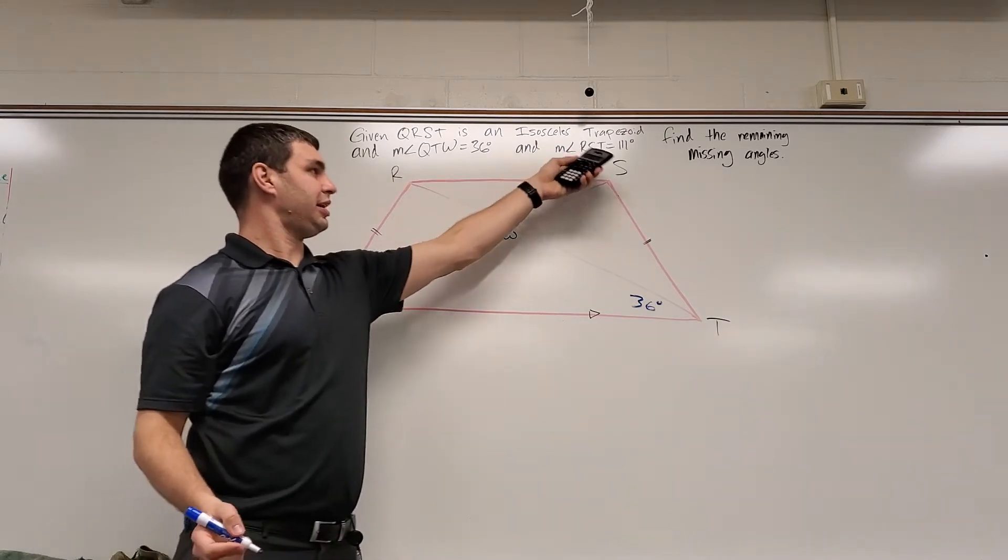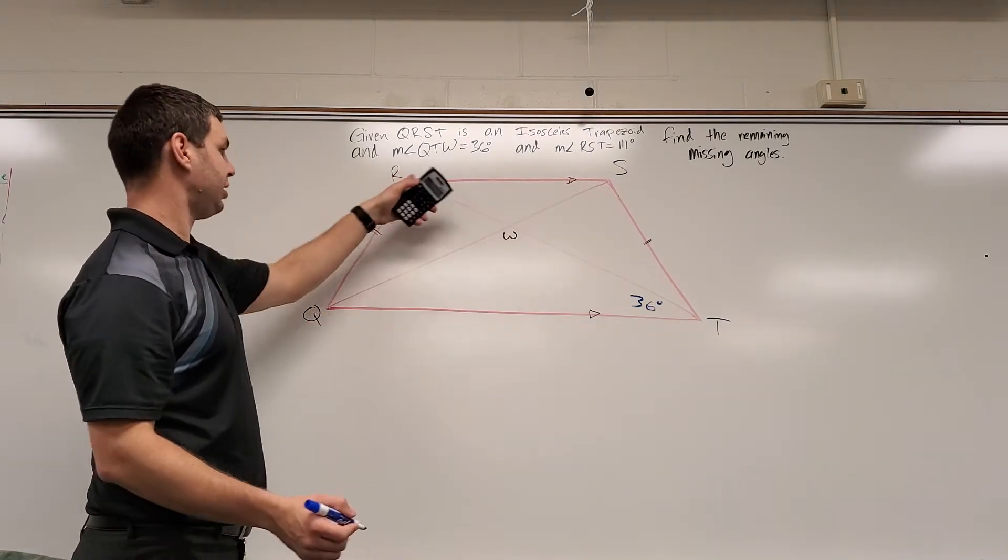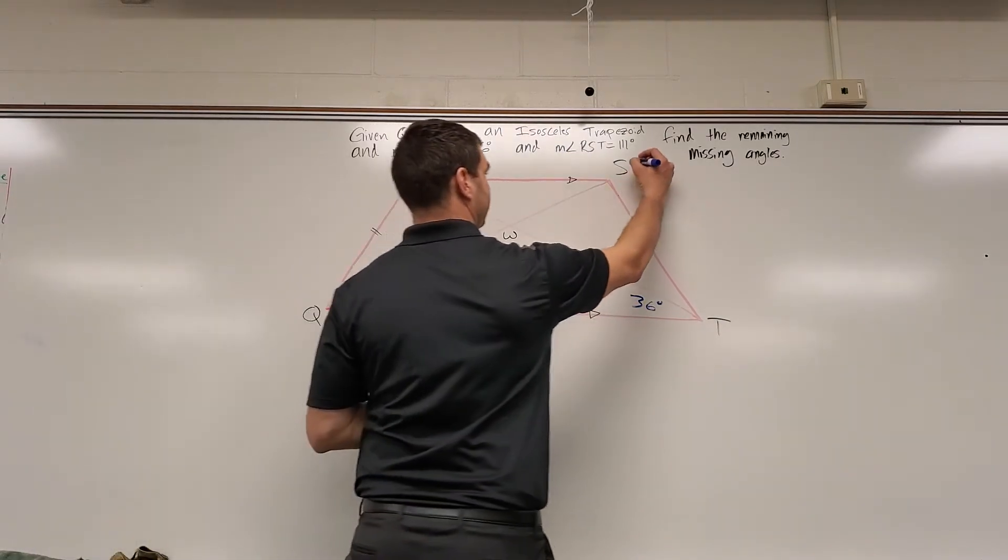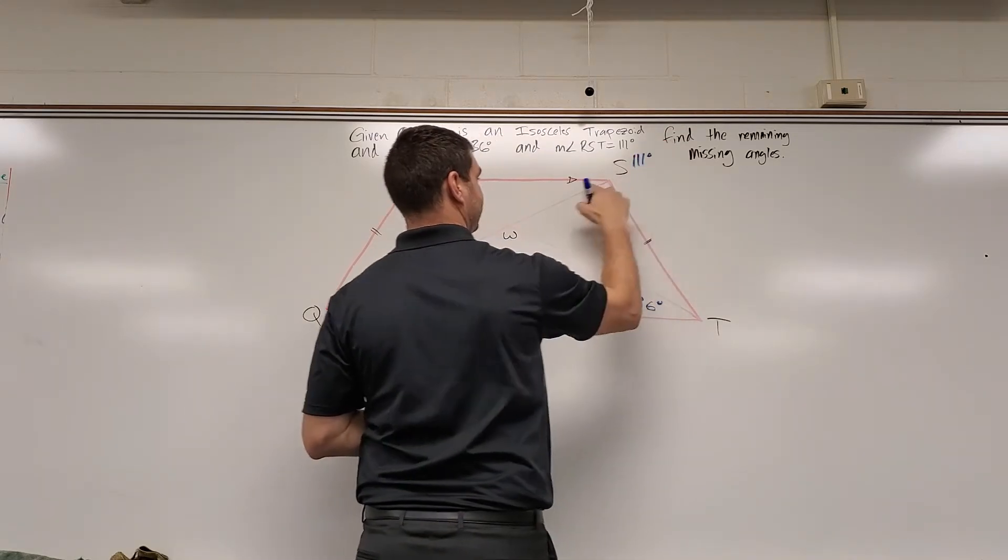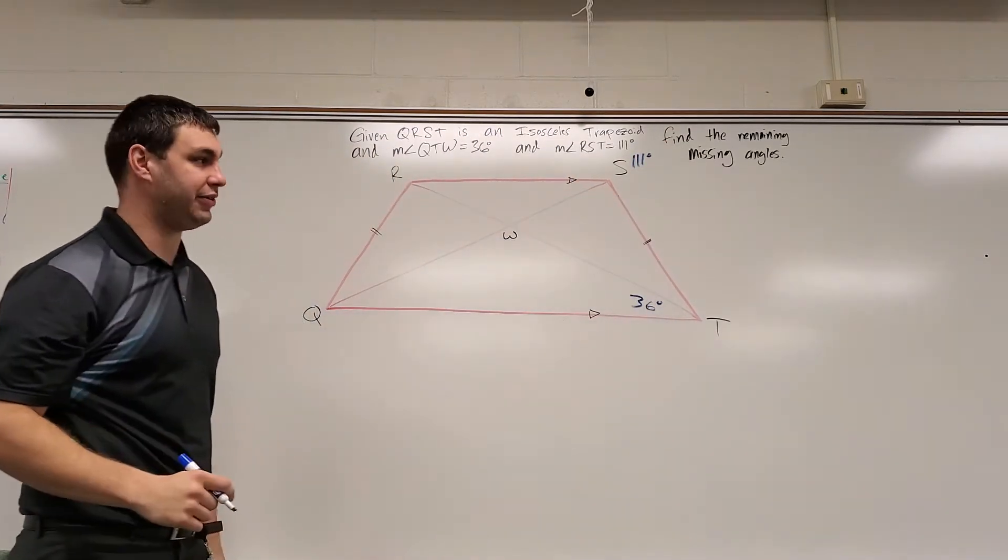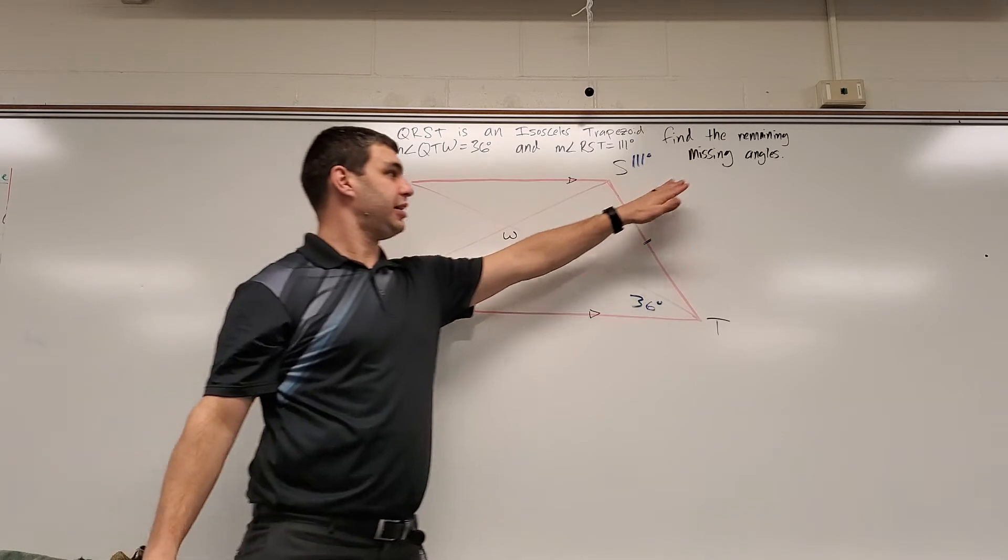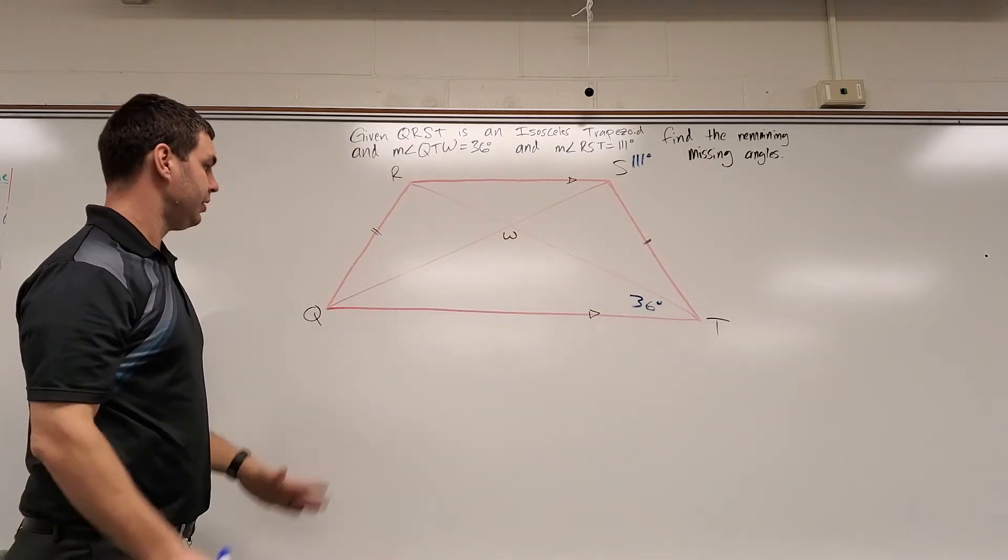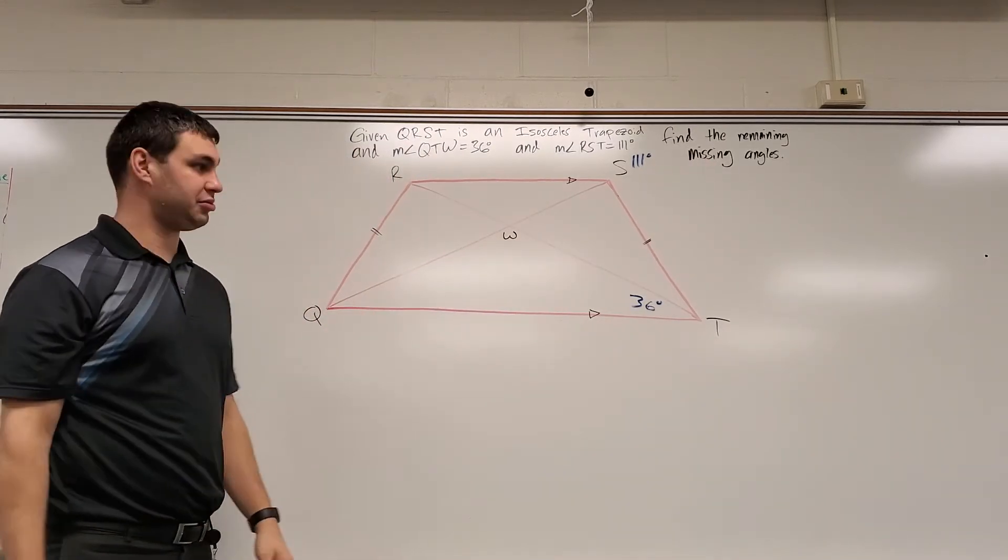And the measure of angle RST is 111 degrees. RST is 111. I'm going to put it on the outside because there's two angles that make up that 111. It says find the remaining missing angles. So there's a lot of angles left.